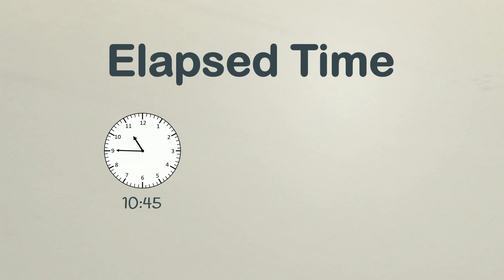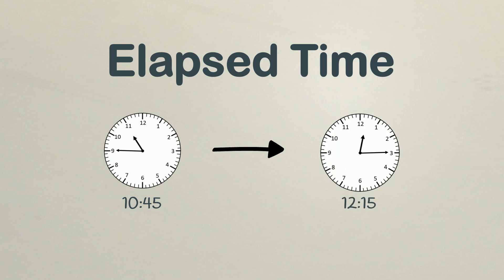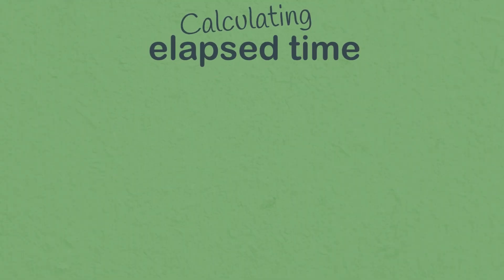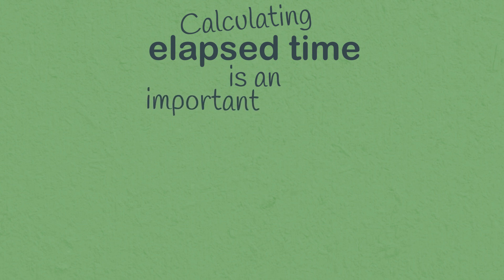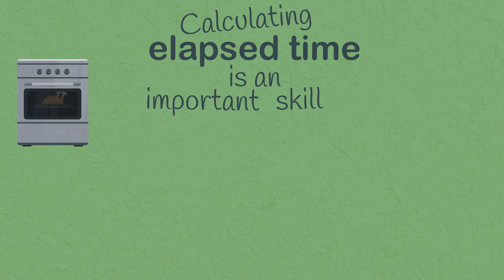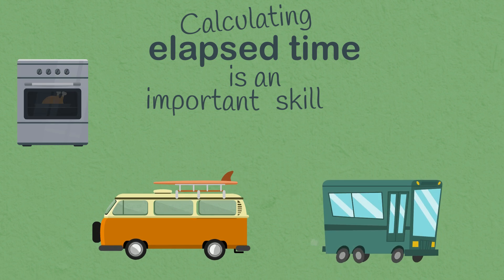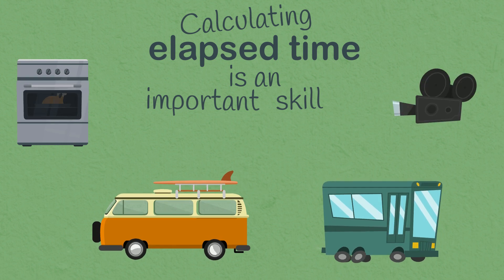Elapsed time is the amount of time that passes from a start point to an end point. Calculating elapsed time is an important everyday skill. It's useful when cooking, taking a drive, catching a bus, or even watching a movie.